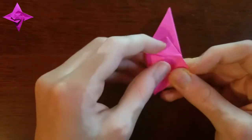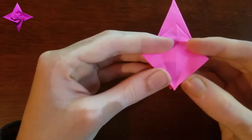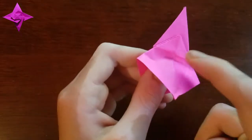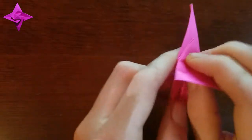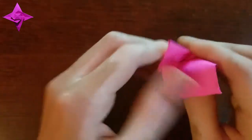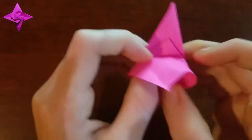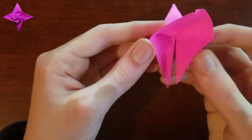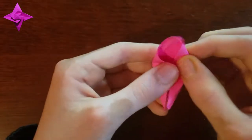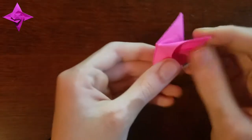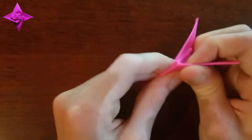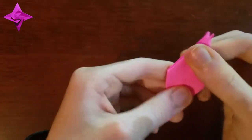Unfold these, lift this up and then just reverse that crease there, fold in along these just like you did last time, reverse folding, and then collapse.